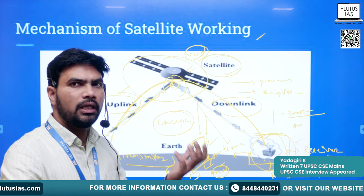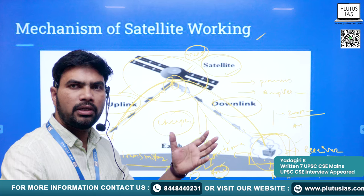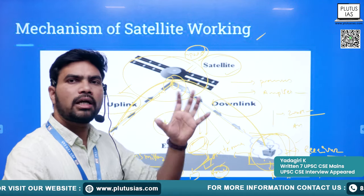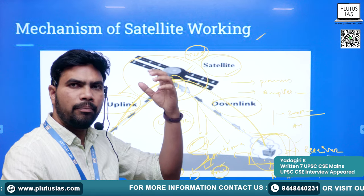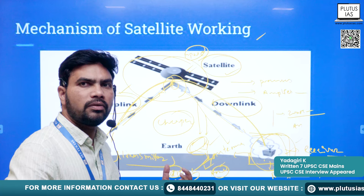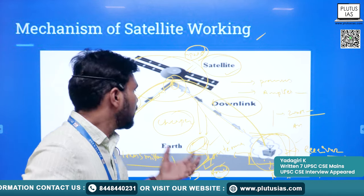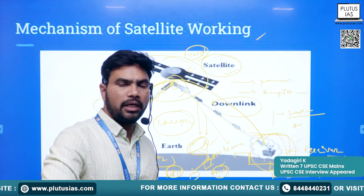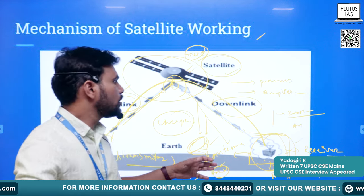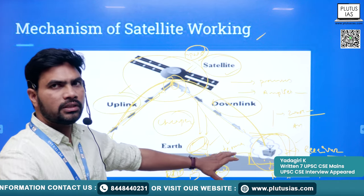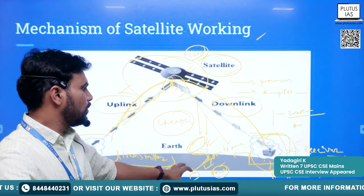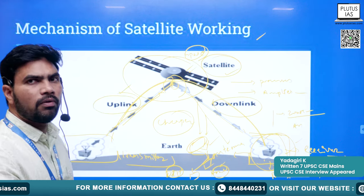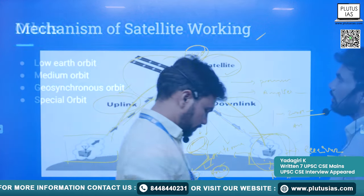We can now install these antennas directly at our homes and directly utilize the signals coming from the satellite. The best example is DTH or D2H — Direct to Home services. Companies like Tata Sky sell this equipment and provide entertainment channels. We install an antenna on top and directly receive entertainment services on our television. Education and entertainment services are now delivered directly to homes.